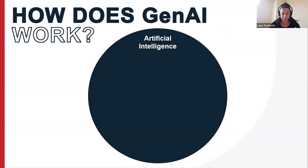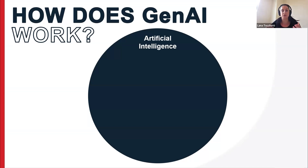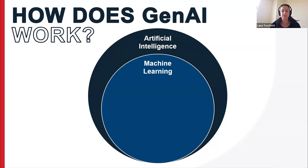How Gen AI actually works is a little bit complex, but having a basic understanding helps you realise that things can go wrong — it's not a perfect system, not 100% foolproof, and it does have some limitations. First, there is artificial intelligence, which describes the ability for a computer to do something we'd normally associate with human intelligence. Next is machine learning — the process of teaching an AI system with data, feeding a lot of data in so it can discover patterns and relationships. The more data you give it, the better it gets at recognising patterns and making decisions based on new data.